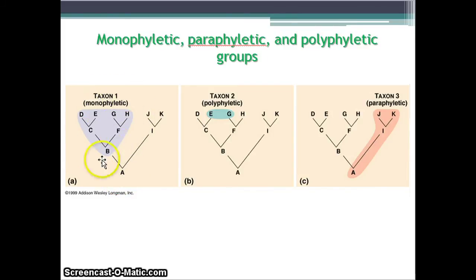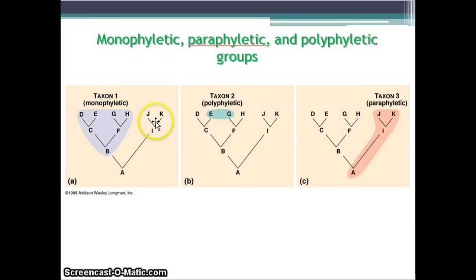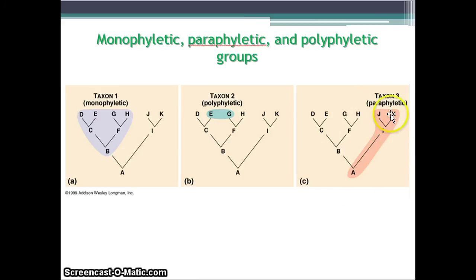Looking at this clearer picture: monophyletic covers basically everybody within that tree — it can be a large group or a smaller one. Polyphyletic covers just a few individual species, not connected by a single ancestor. Paraphyletic covers the ancestor but doesn't cover every single descendant. For example, if you start from B you have C, F, and the others; whereas this one starts from A and goes to I, but doesn't cover B, C, or F — it goes to I, J, K. That's how you distinguish the different groups.